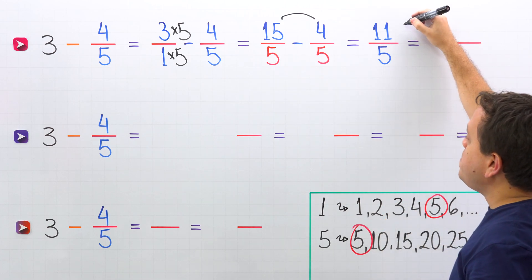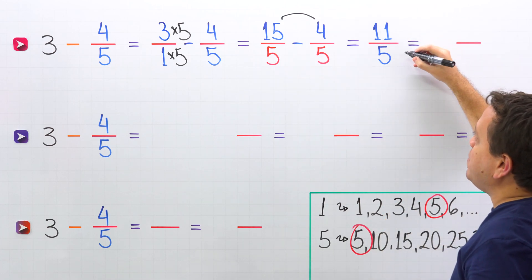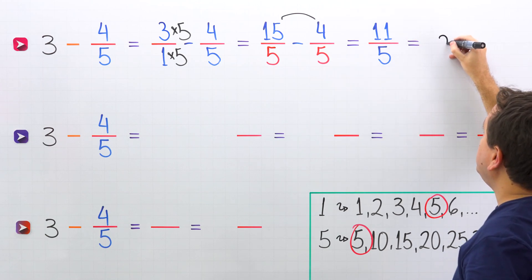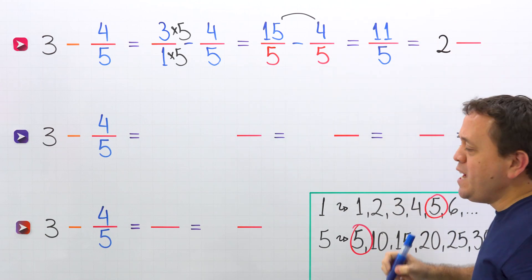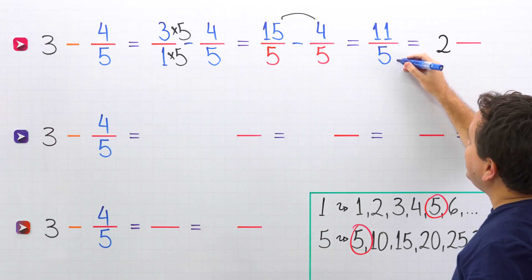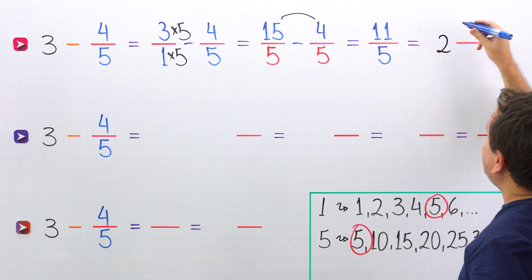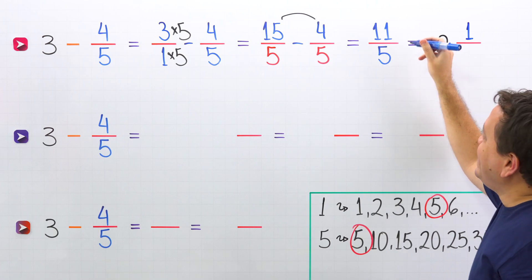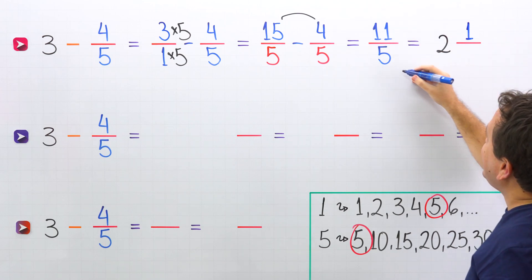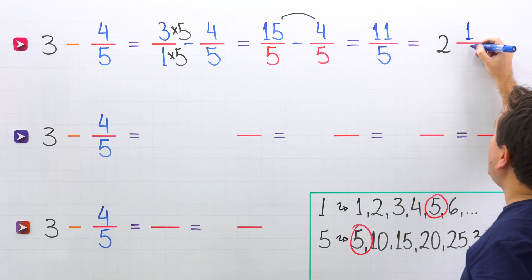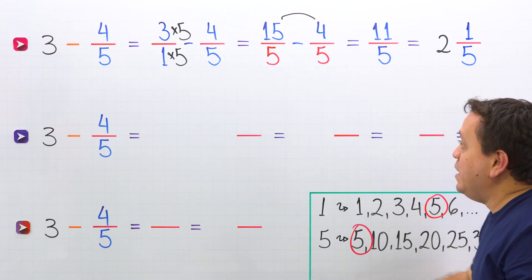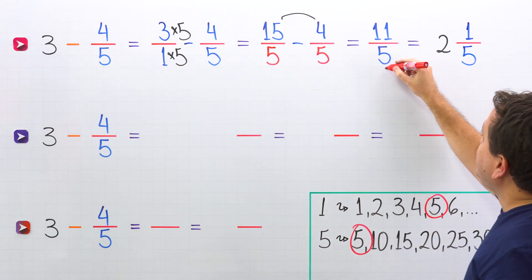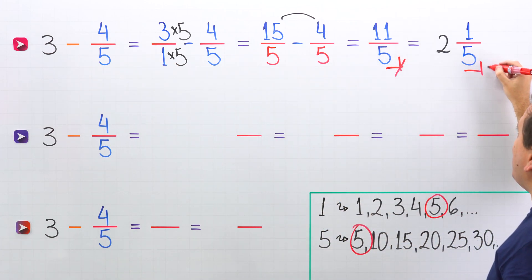How many times does 5 go into 11? 5 goes into 11, 2 times. And then we multiply: 2 times 5 is 10. To get 11, we need to add 1. Then we keep the denominator the same — 5. In that way, 3 minus 4 fifths equals 11 fifths, or 2 and 1 fifth.